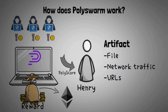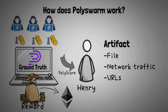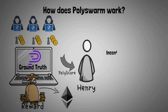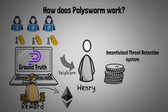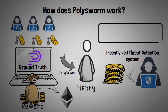The money from the bounty and the assertions becomes the reward, which is securely escrowed in an Ethereum smart contract. After that comes the ground truth: in two weeks, the PolySwarm protocol converges on industry consensus. After finding the ground truth, the system rewards engines that made the right assertion with money from the initial bounty from the enterprise, plus the money the losing engines included with their assertion. This is an incentivized threat detection system — unlike any other multi-scanner, in PolySwarm there is money at stake.